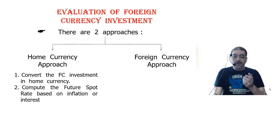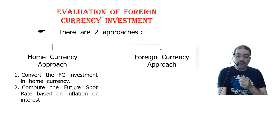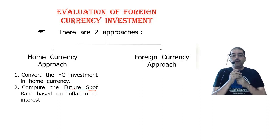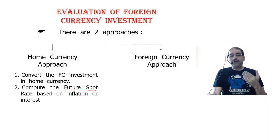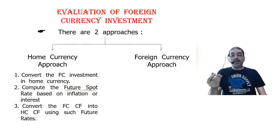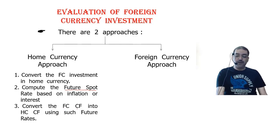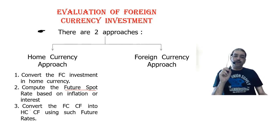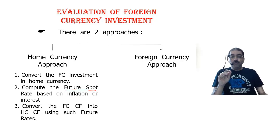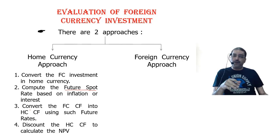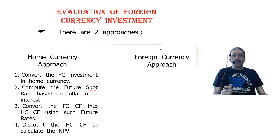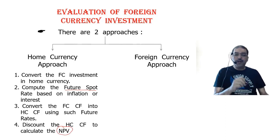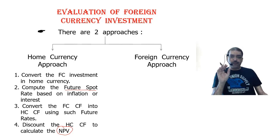The third step is to convert the foreign currency cash flows into home currency cash flows using the future rates. The fourth step is to discount the home currency cash flows as you normally do in capital budgeting, calculate present values, and then calculate NPV: present value of cash inflows minus present value of cash outflows.